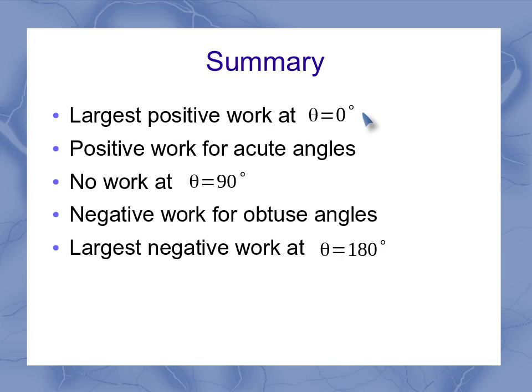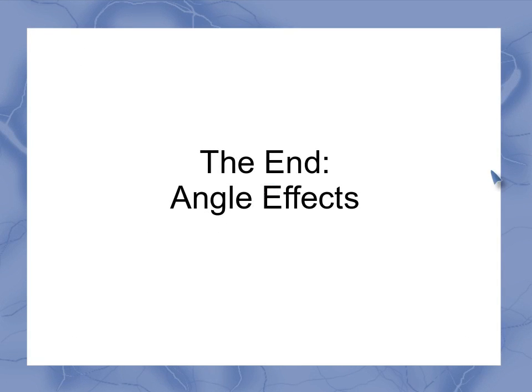So to summarize, when our force and our displacement are in the same direction, you've got the largest positive work. When I've got them at 180, that's my largest negative work. Any acute angle gives me positive work, and any obtuse angle gives me negative work. And I've got no work if I'm at an angle of 90 degrees. So now as you approach different problems, you can think conceptually about what type of work you expect to get and how that angle effect is going to affect your work.